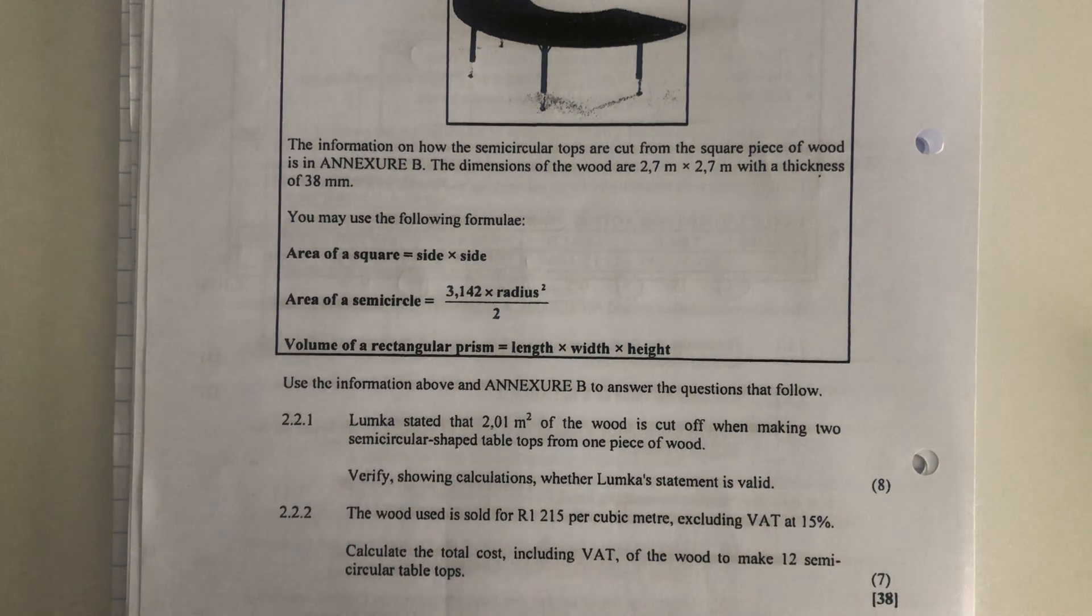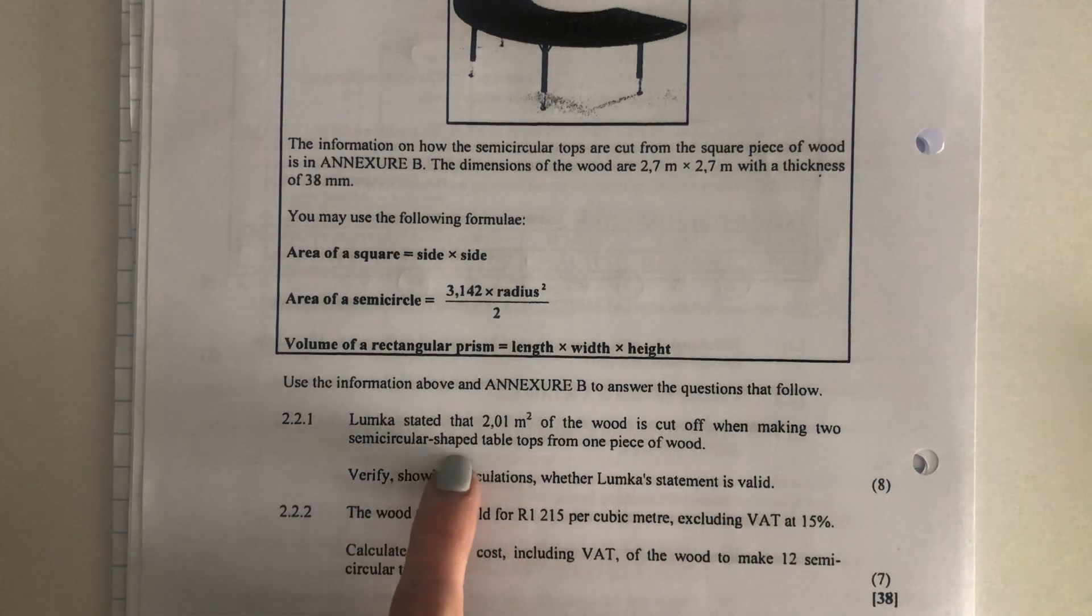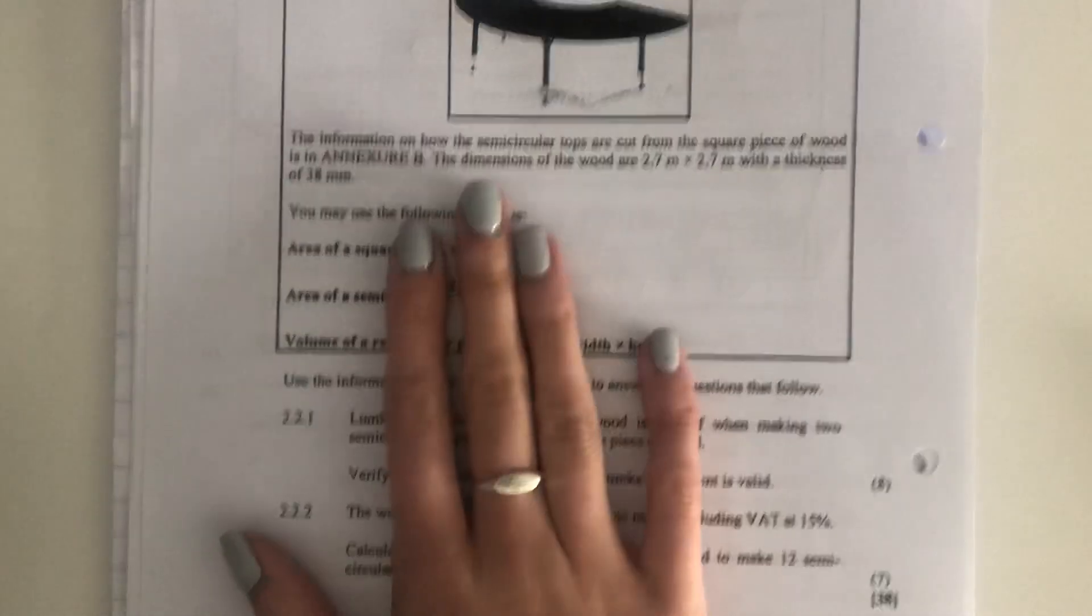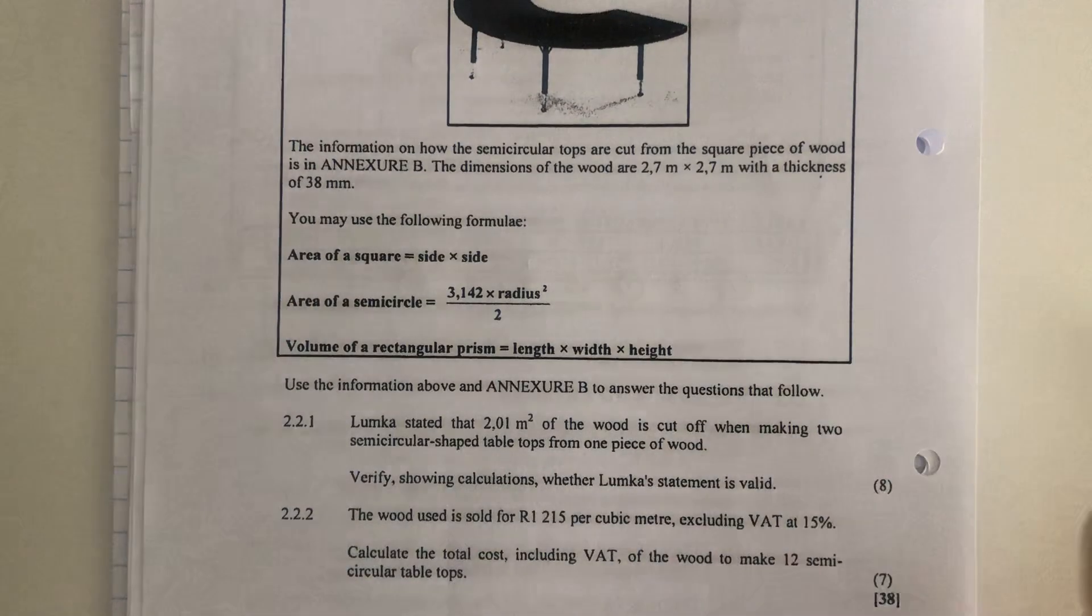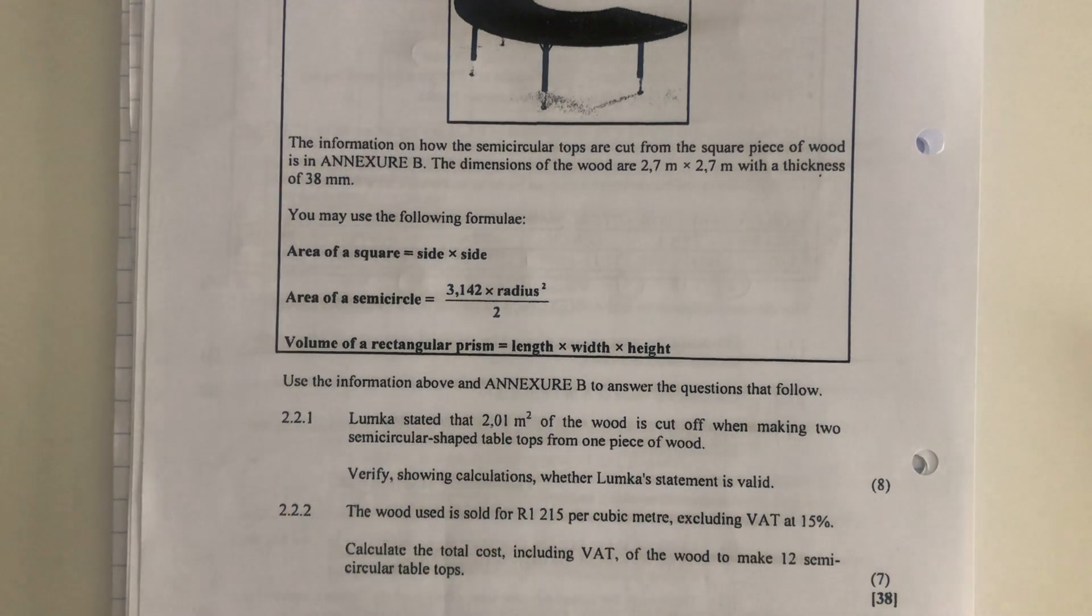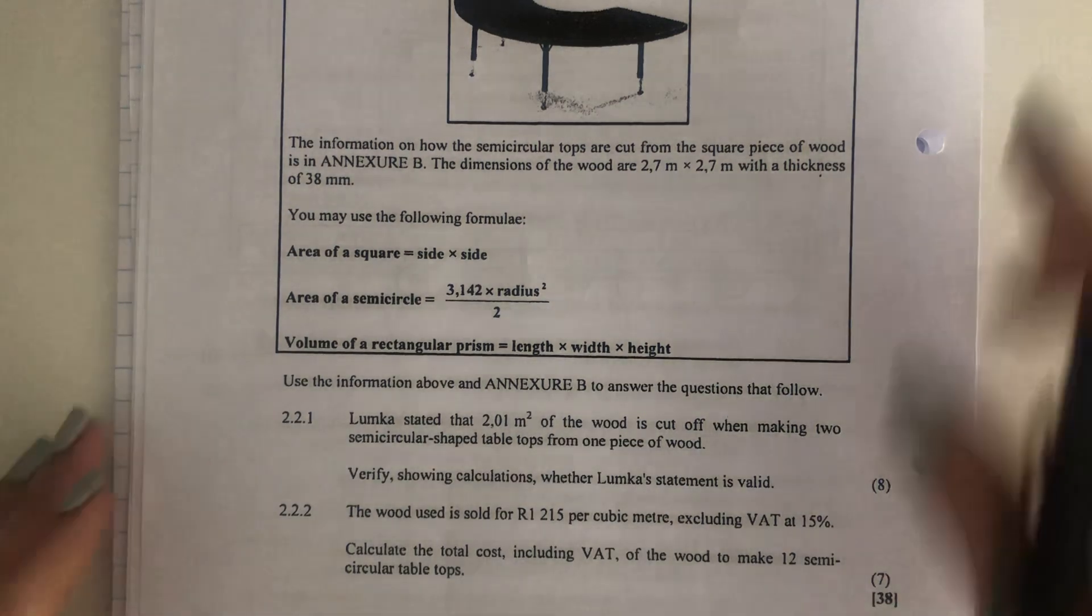Let's go to the next piece of information. It says, you may use the following formula that gives us area of a square, which you should know, area of a semi-circle, and then volume of a rectangular prism is length times width times height. So she's basically saying the wood that is not used for the tabletops, the wastage is 2.01 meters squared. Meters squared indicates area. So then it says, verify showing calculations whether Lumka's statement is valid.